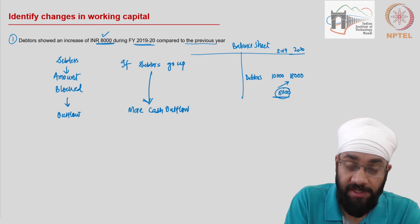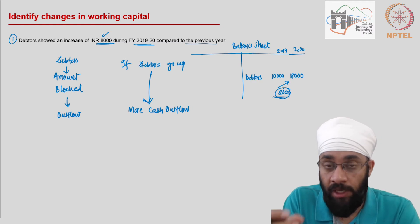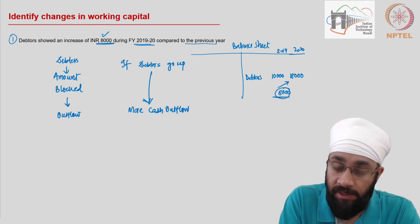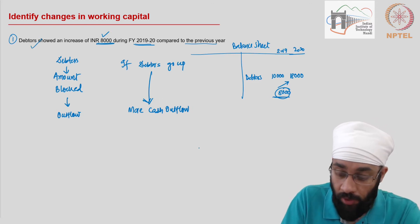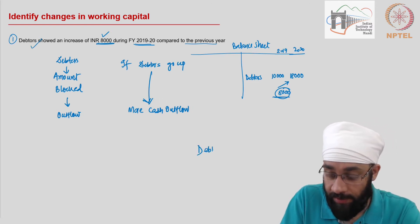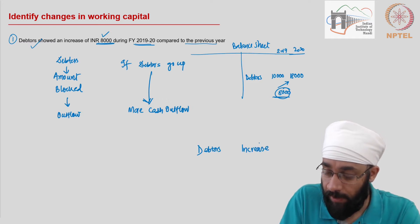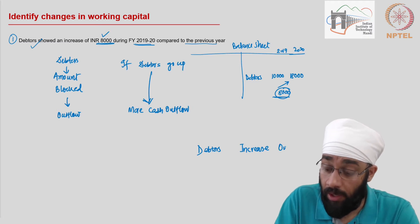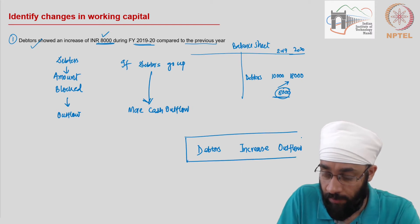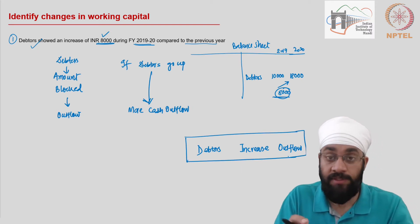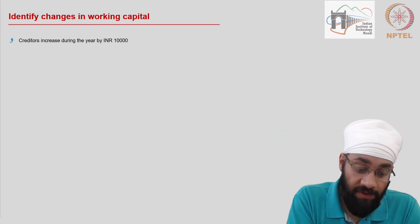Working capital is made up of current assets and current liabilities. Looking at debtors, which are one type of current asset, the conclusion is: if debtors increase, this will result in an outflow. That is the key learning from this example.